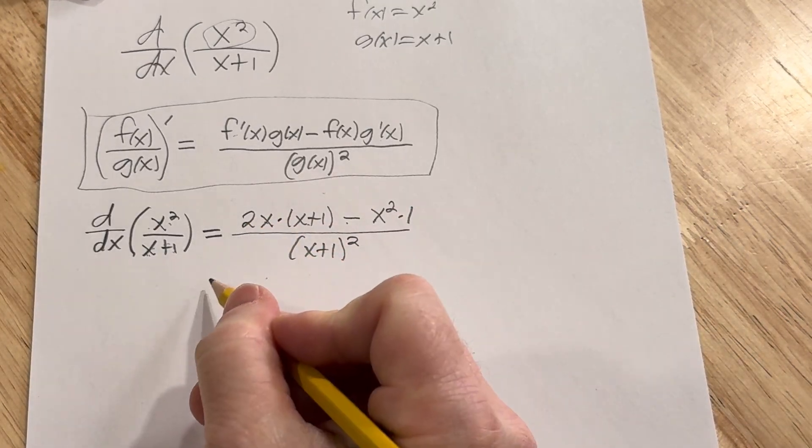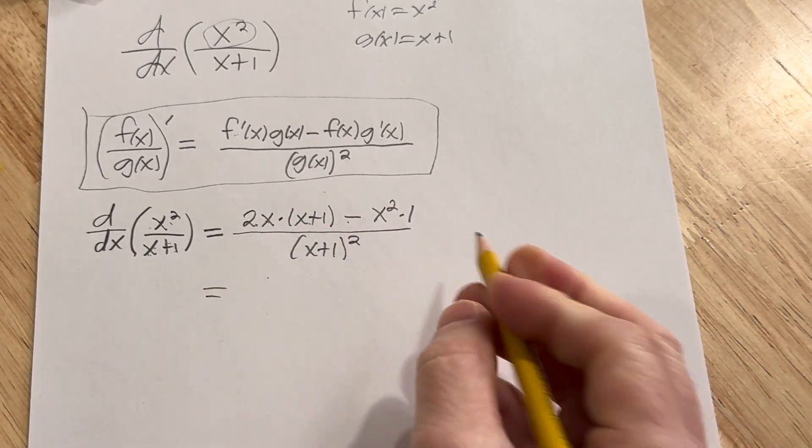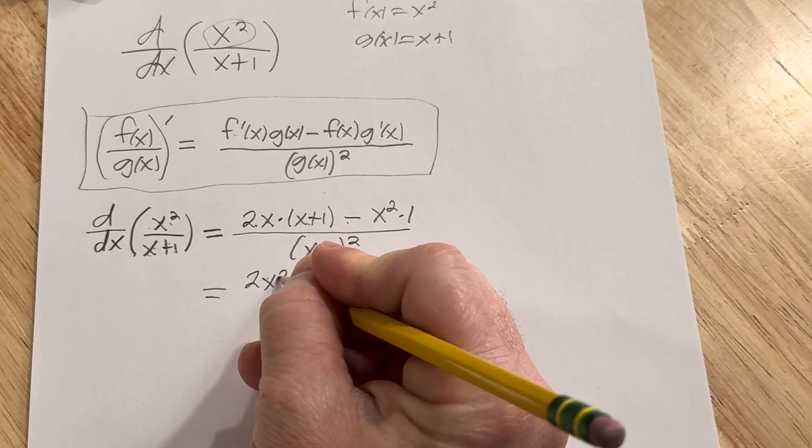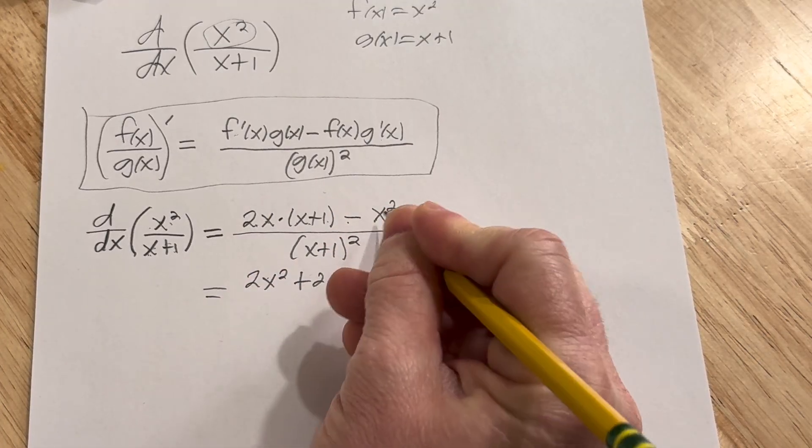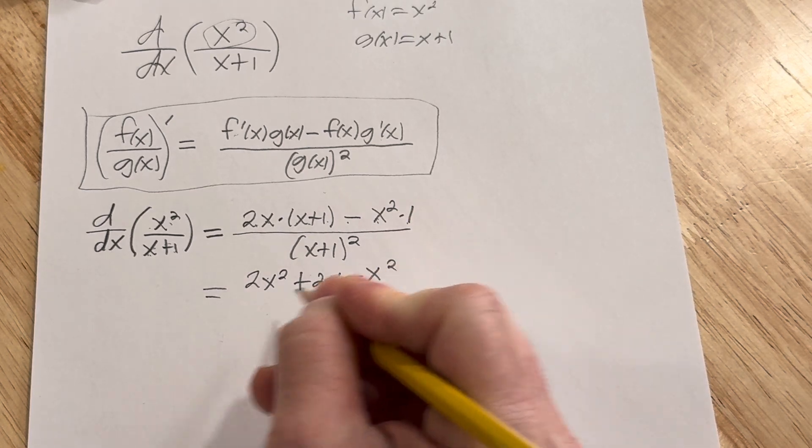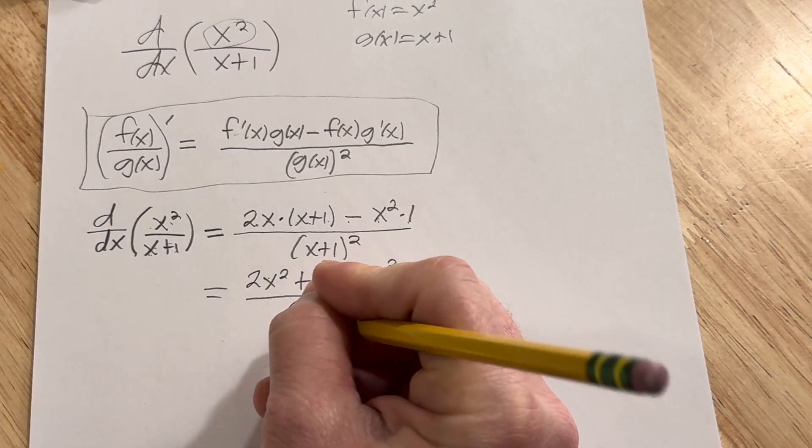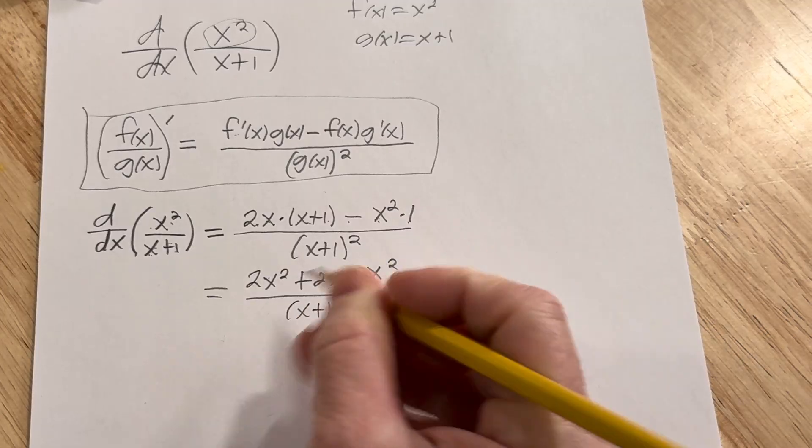So let's go ahead and distribute here. This is equal to 2x times x, which is 2x squared, and then 2x times 1 is 2x, minus x squared times 1, which is just x squared. All of this is divided by x plus 1 quantity squared. Look at this.